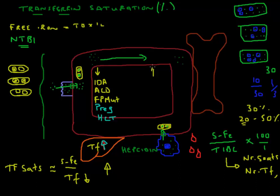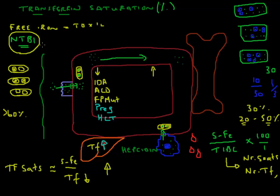On the other side, one can have an increase in transferrin saturation. A value above 50% is considered abnormal in females and above 60% in males. Any value higher than 45–50% is generally a reason to screen a patient for iron overload conditions. It is usually when transferrin saturation goes above 60% that non-transferrin bound iron — the toxic form we do not want — appears in the blood.